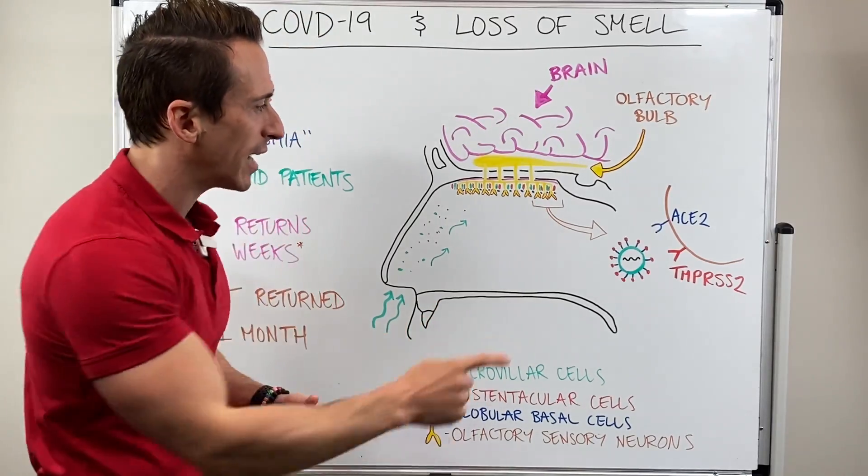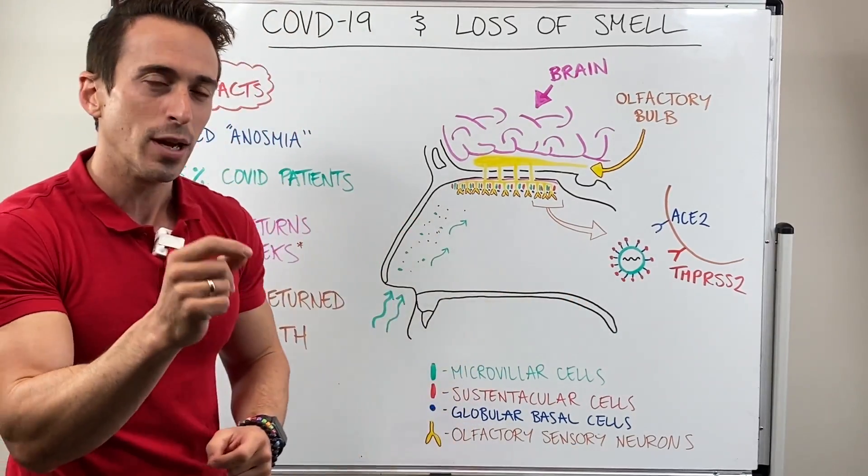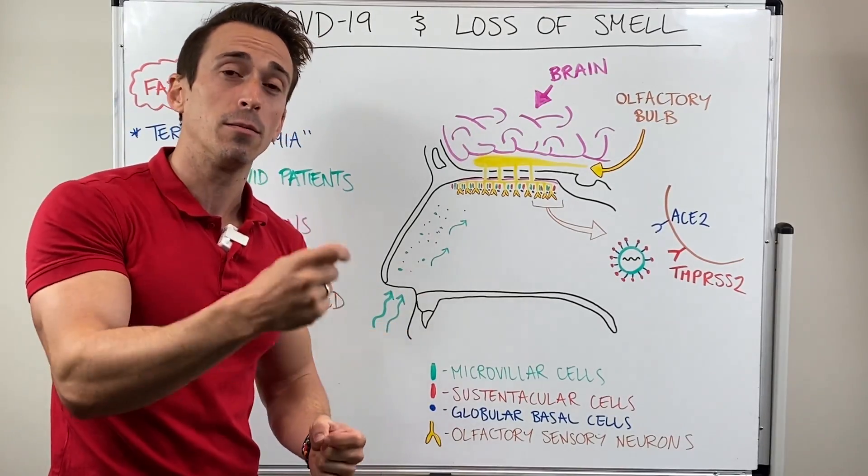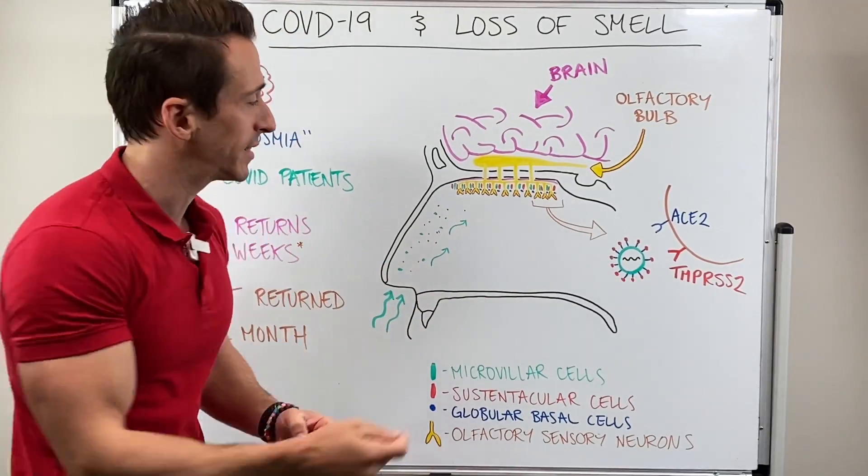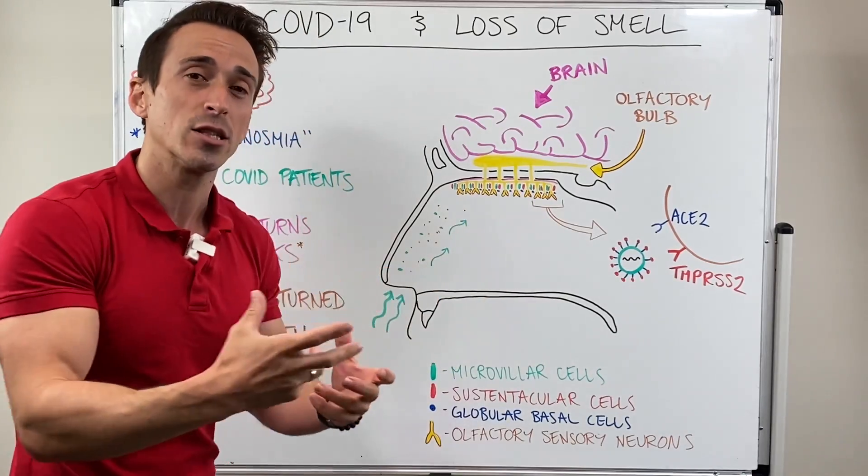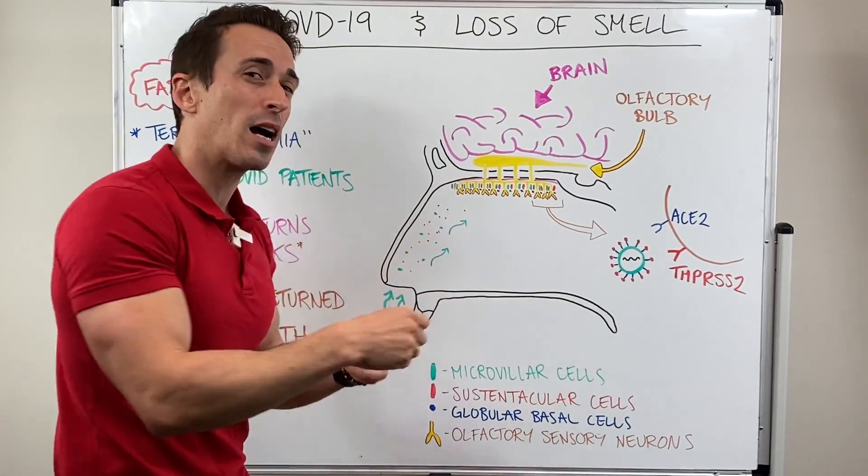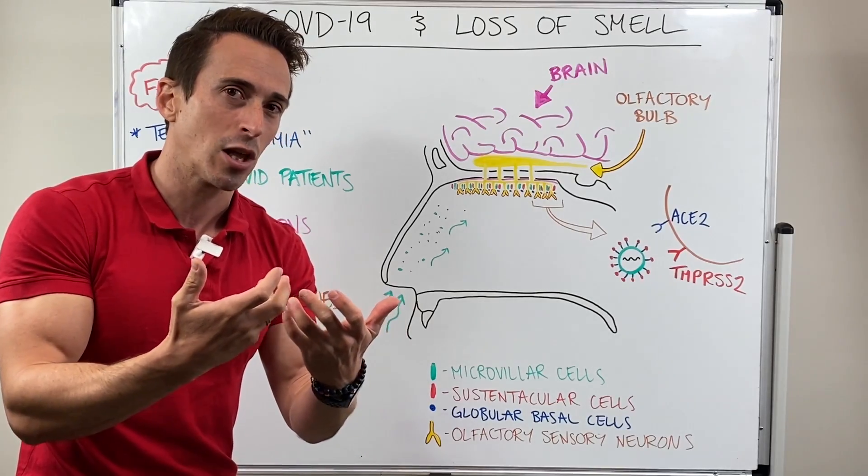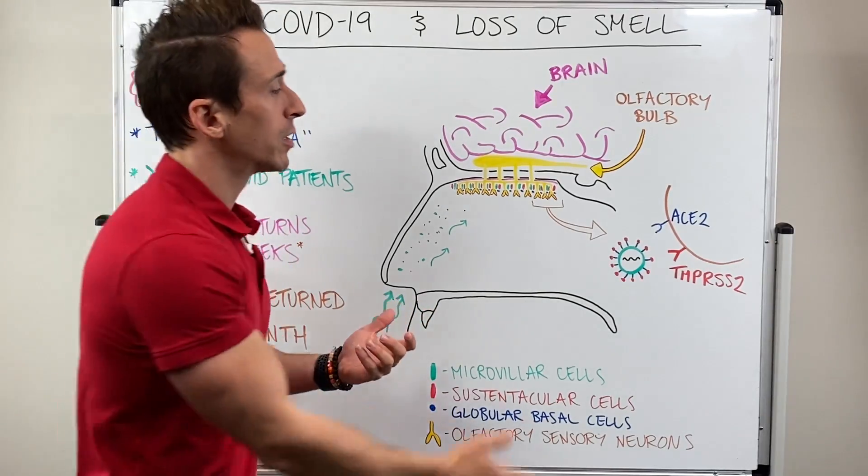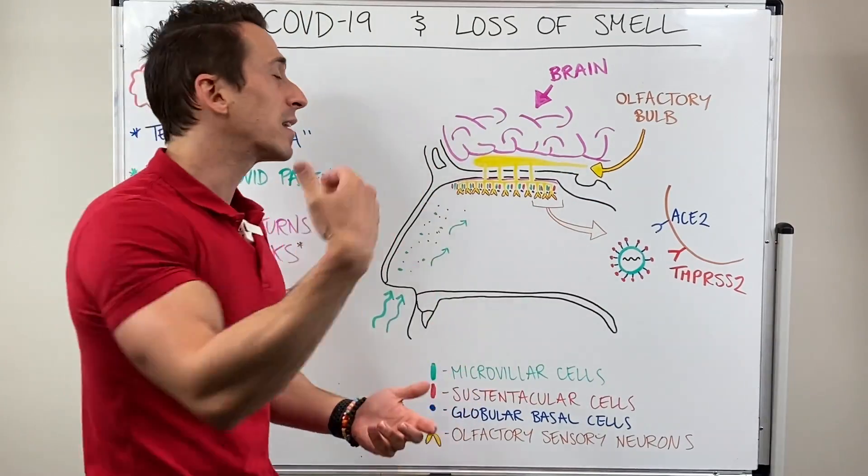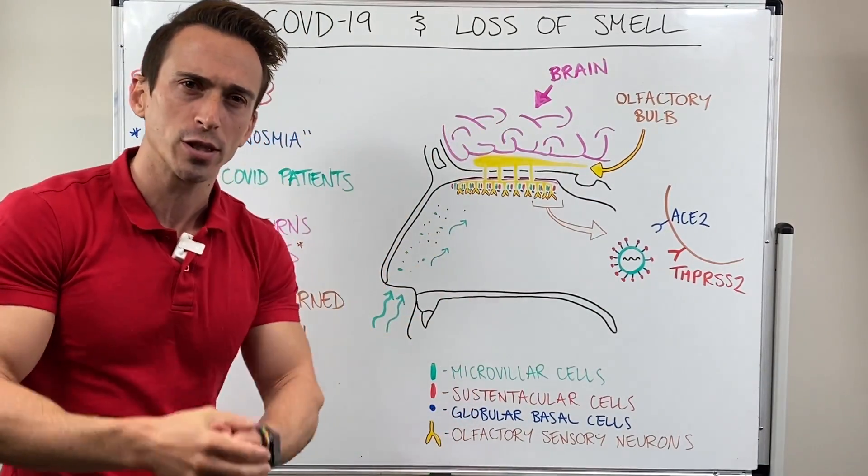What this highlights is that the virus SARS-CoV-2 tends to infect the supporting cells and damage their ability to maintain homeostasis for the olfactory sensory neurons. Therefore, over time, the olfactory sensory neurons can't do their job and the sense of smell is lost. It's transient because once the virus has run its course, the supporting cells can be regenerated and then can support the olfactory neurons.